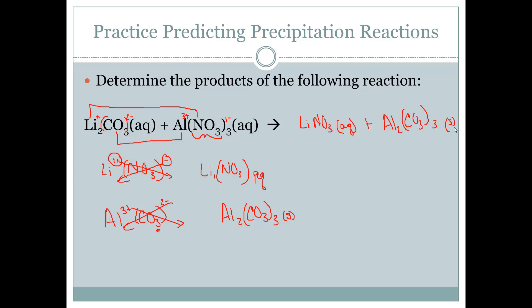Now we balance it. We have three CO3s on the right; we only have one on the left, so I put a 3 in front. I have one NO3 here and three of them on the right, so I put a 3 in front of it. That affects our lithium count, so I come back to that. Aluminum is two, so I put a 2 in front. This then changes the number of nitrates to be two times three, so this should actually be a 6. So: three lithium carbonates, two aluminum nitrates, six lithium nitrates, and one aluminum carbonate.